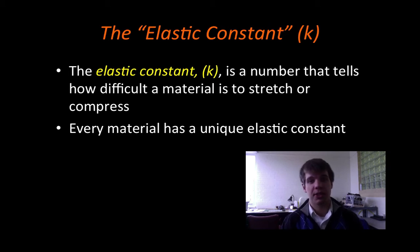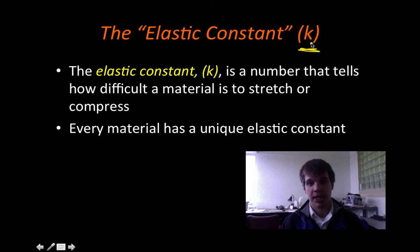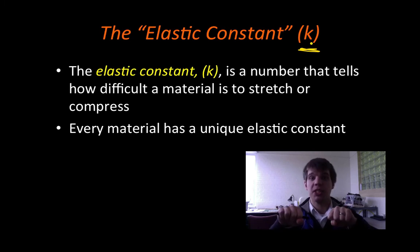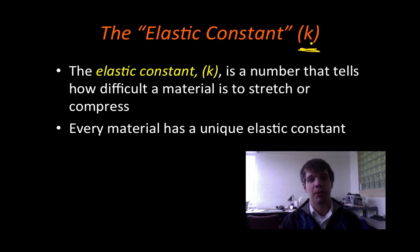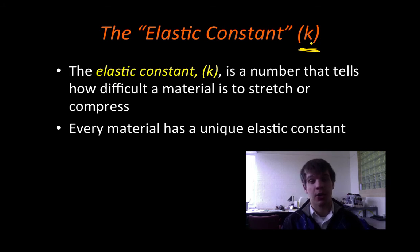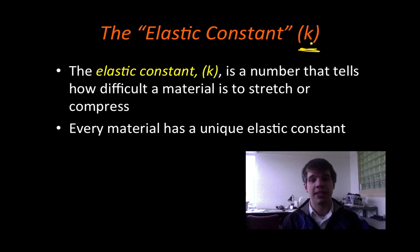All of these elastic materials have this thing called an elastic constant, which in science we designate with the letter K. The elastic constant is just a number that tells how difficult a material is to stretch or compress. The higher the elastic constant is, the more difficult it is to bend or compress that material. Every single material is going to have an elastic constant and they're all unique. A rubber band has a different elastic constant than a spring, and a spring has a different elastic constant than a bungee cord.